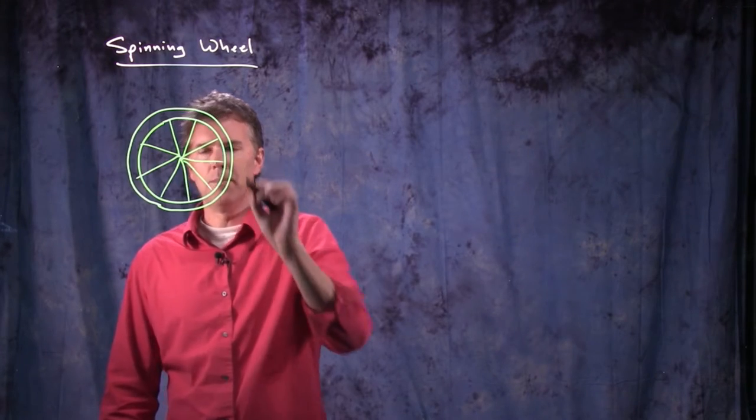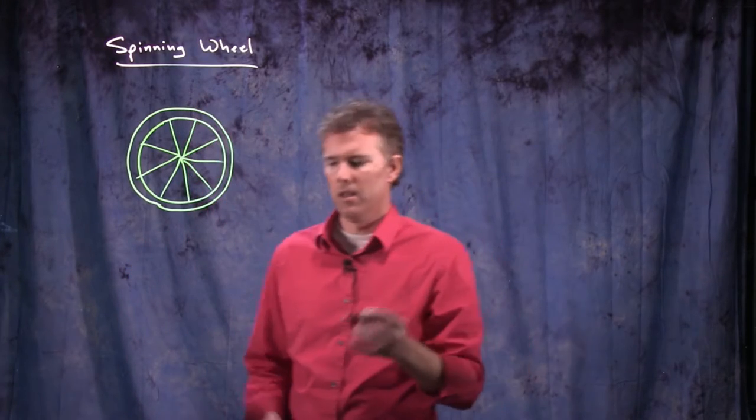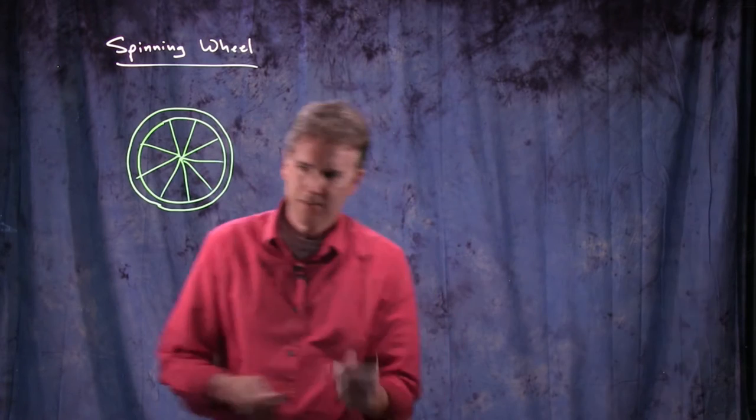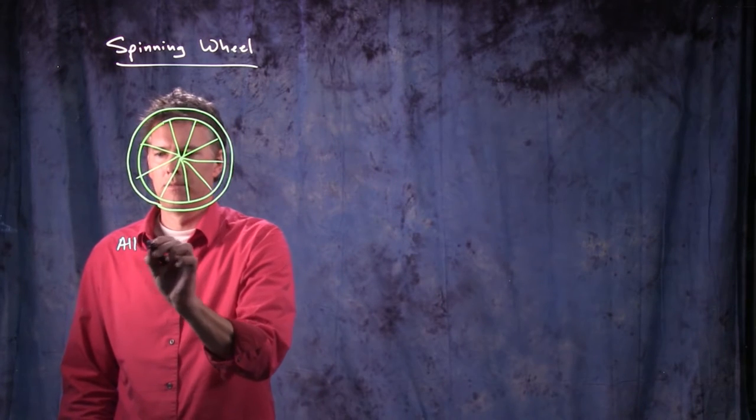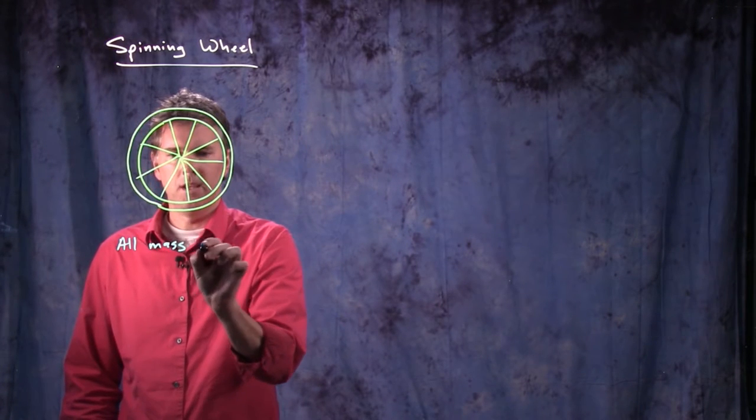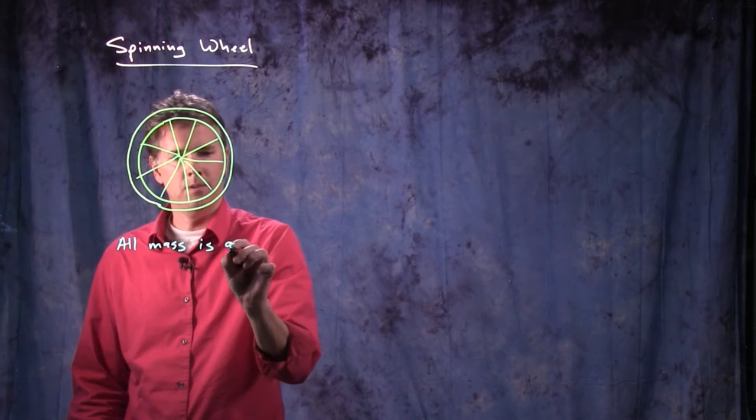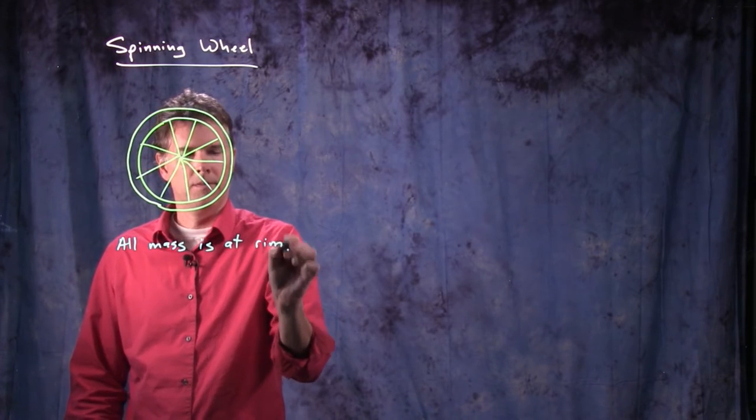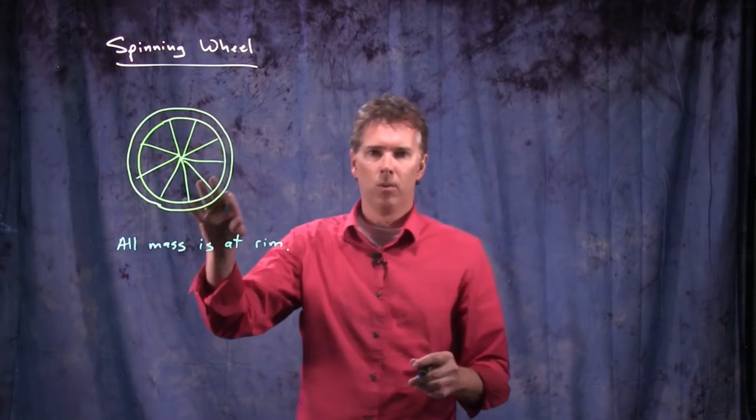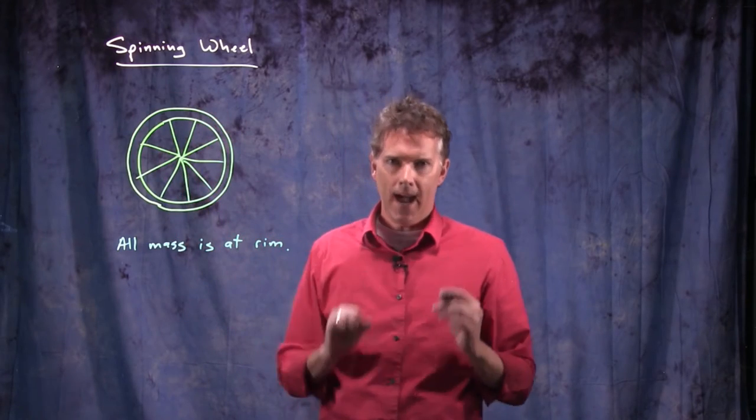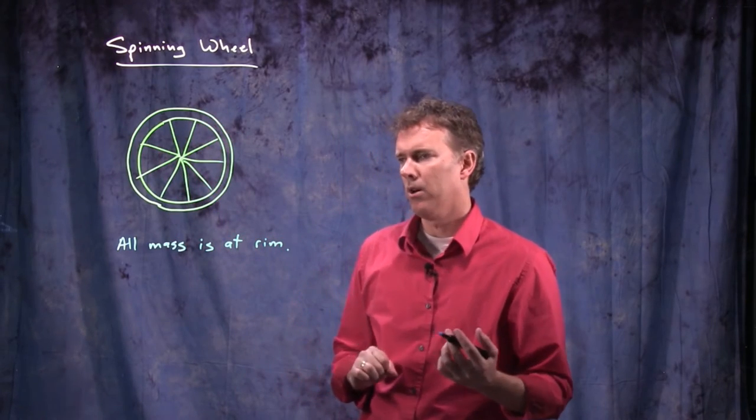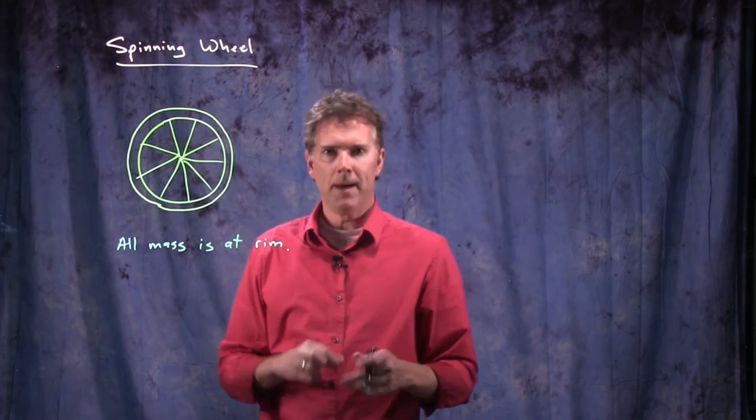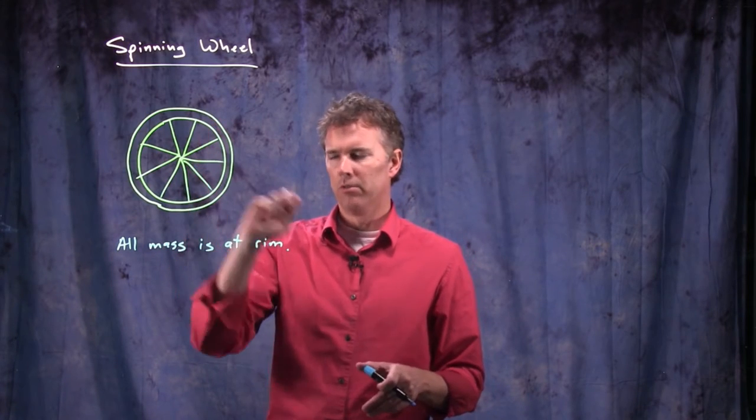And the approximation that we typically make for a wheel is that all the mass is out at the edge. All the mass in that wheel is basically at the radius capital R. We're going to ignore any mass or moment of inertia from the spokes.